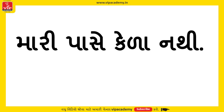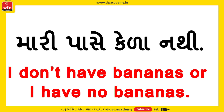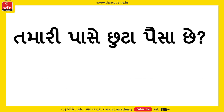Suppose you want to buy bananas but the shopkeeper doesn't have them. The shopkeeper says: 'I don't have bananas' or alternatively 'I have no bananas.' Both are correct options in English.